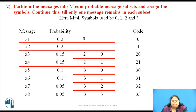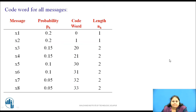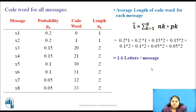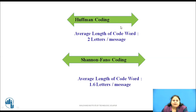The codewords for all messages are obtained by tracing the symbols from left to right. This table shows the codewords obtained for all messages using Shannon-Fano coding method and the length of each codeword. The average codeword length is calculated using the formula L̄, and substituting the values we get L̄ equal to 1.6 letters per message. By Huffman coding the average length was 2 letters per message, and by Shannon-Fano coding it is 1.6 letters per message.